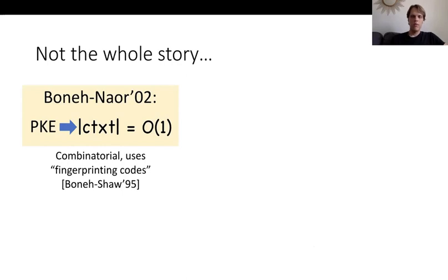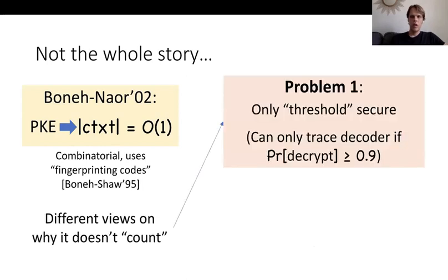Well, there are a couple of different views on why the Boneh-Naor scheme doesn't count. One view found in much of the literature is that the Boneh-Naor scheme doesn't meet the usual definition we want, in the sense that it is only a threshold scheme. A threshold tracing scheme means that you can only trace the decoder if it decrypts most of the time. But remember, we want to trace decoders that decrypt very, very rarely.